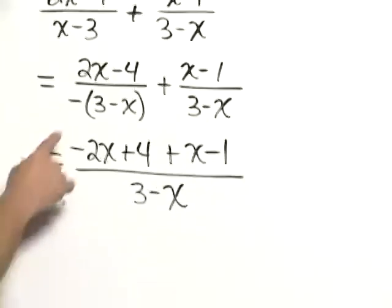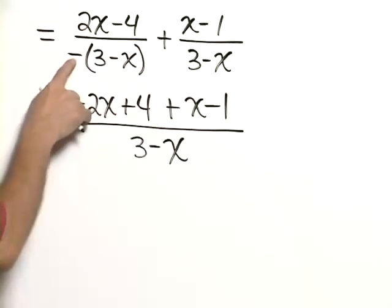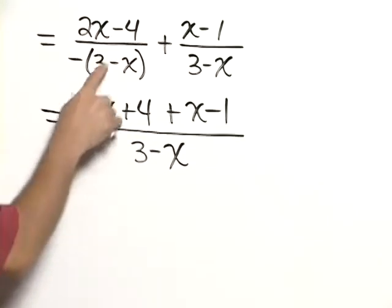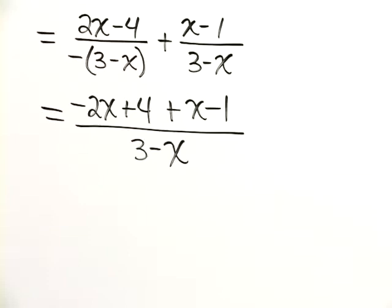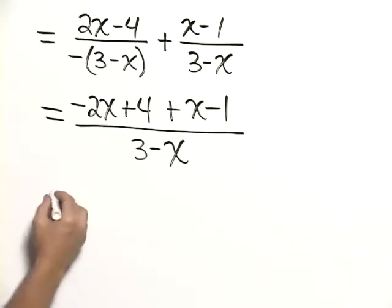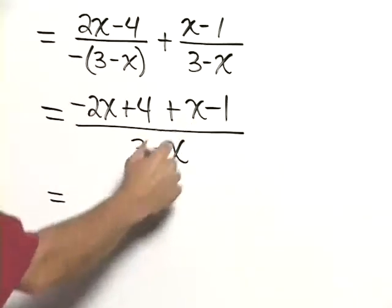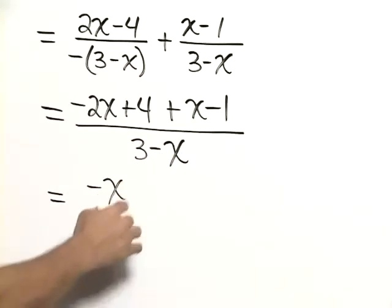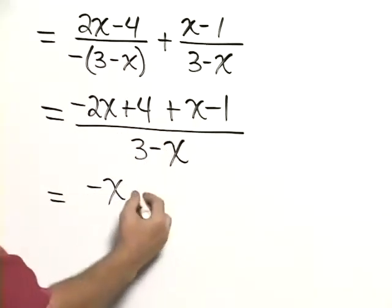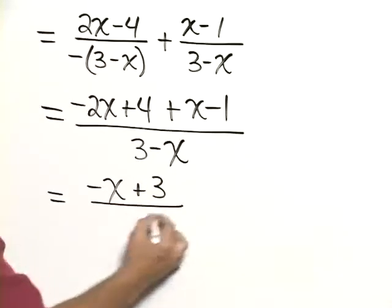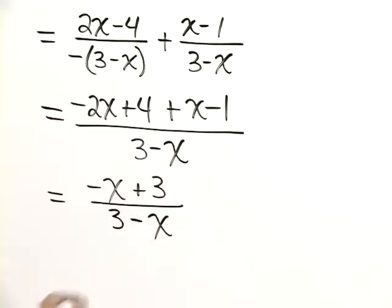Once again, I applied the negative sign here, changing each of the signs in the numerator. So now we simplify: negative 2x plus x is negative x, 4 minus 1 is plus 3, over 3 minus x.